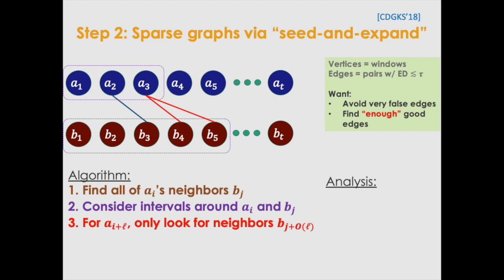If we look at a3, since we know it's right by a2, we only need to check things that are right by b3. Since we know a2 matches to b3, a3 is probably going to match to b4 or b5.